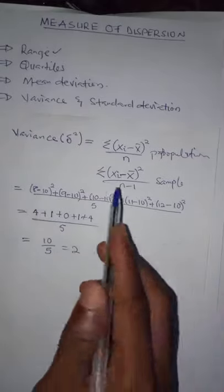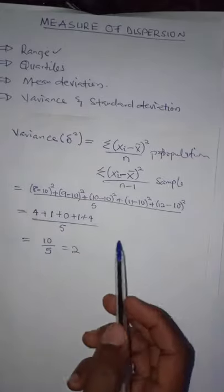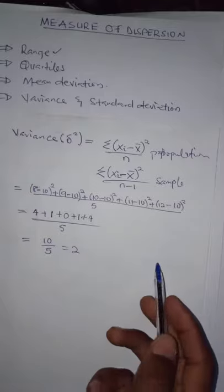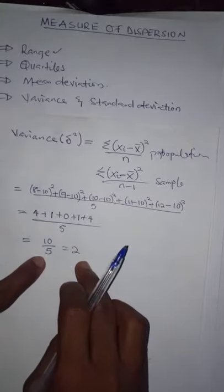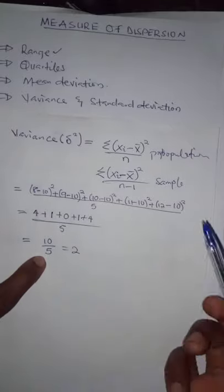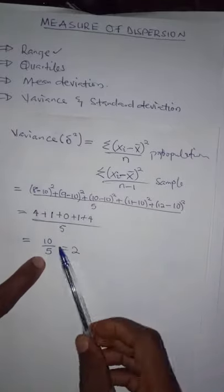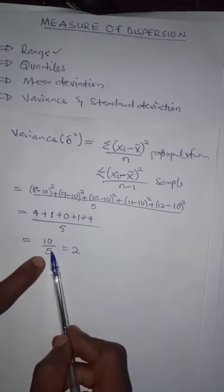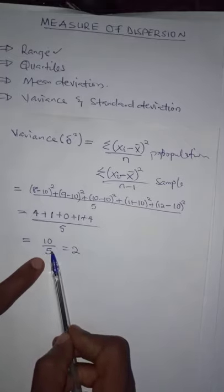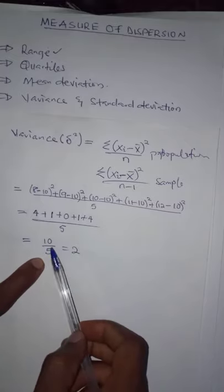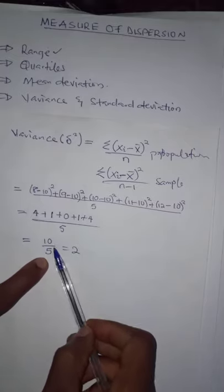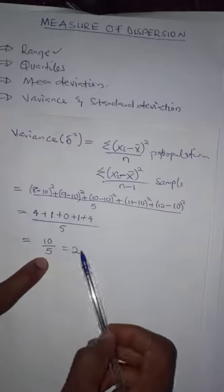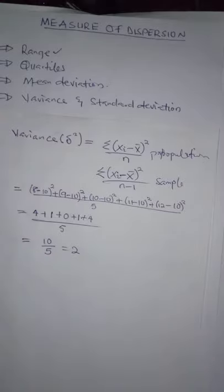So the variance of this set of data is 2 — this is the population variance. For sample variance, you subtract 1 from n, so it would be 10 divided by 4, which gives the sample variance.